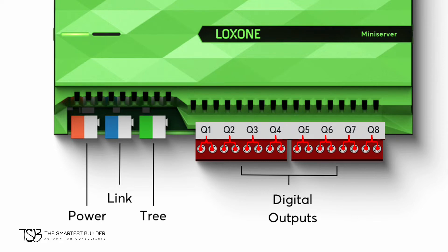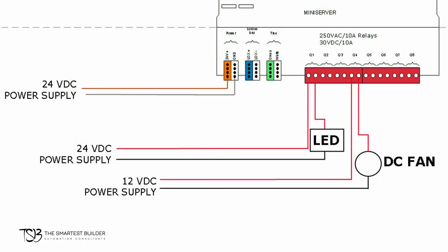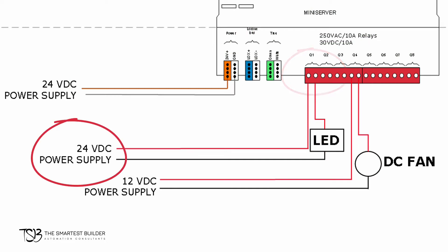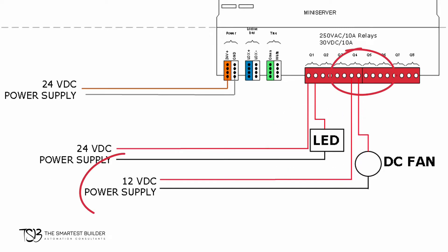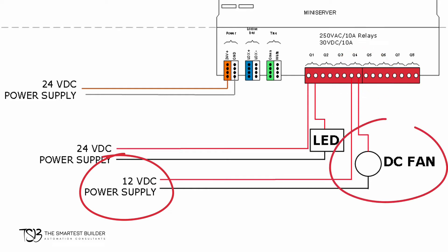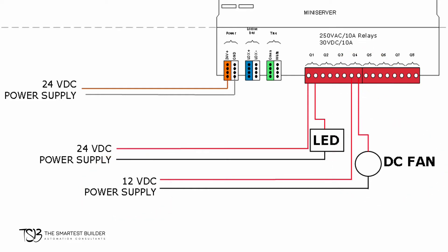Moving on to our connection diagram, you can see that we use the Q1 position for a 24-volt LED on and off control, and then we use the Q4 position for a 12-volt DC fan on and off control. With this setup you will be able to turn on or off either the LED and/or the fan.